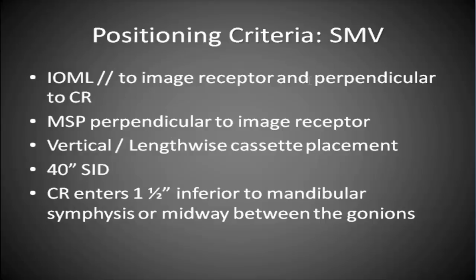We want a vertical or lengthwise cassette placement. Remember that you can typically do this on a 10 by 12 for skull. If you're doing it as a sinus series, you probably want an 8 by 10. We want a 40-inch SID, and the central ray enters one half inch inferior to the mandibular symphysis or midway between the gonions.